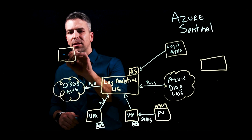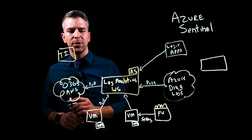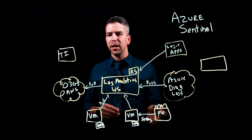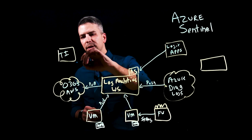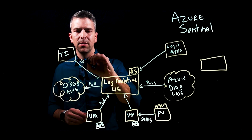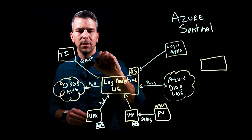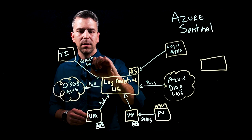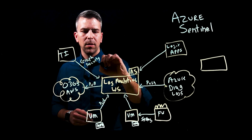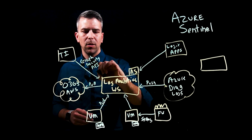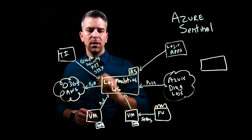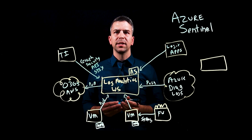We also have a threat intelligence capability to pull in your TI data to correlate with your other data that you're bringing in from all these sources. You can send that data using the Graph Security API or in STIX-TAXII format via our STIX-TAXII connector.